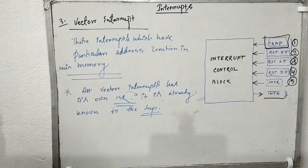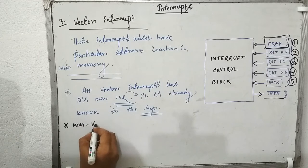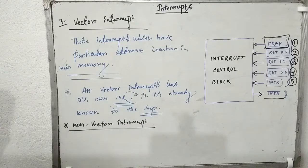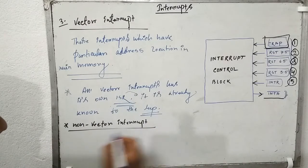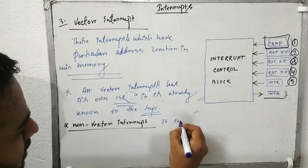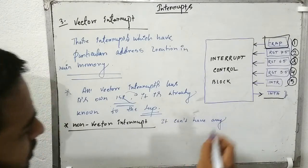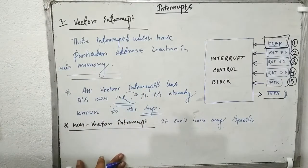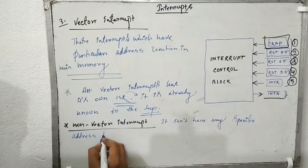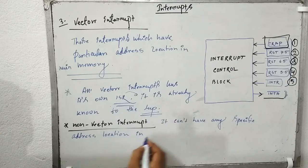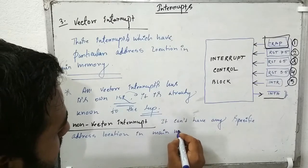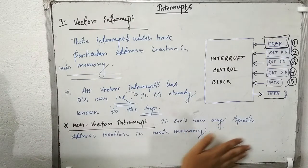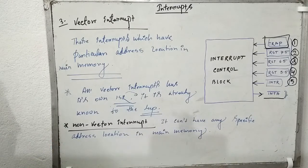All these ISRs (Interrupt Service Routines) are already known to the microprocessor. But what about non-vector interrupts? The opposite applies — non-vector interrupts do not have any specific address location in main memory.